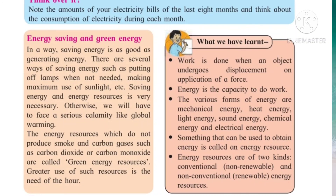In summary, work is done when an object undergoes displacement and application of force. Energy is the capacity to do work. The various forms of energy are mechanical energy, heat energy, light energy, sound energy, chemical energy, and electrical energy. Something that can be used to obtain energy is called an energy resource. Energy resources are of two kinds: conventional or non-renewable, and non-conventional or renewable energy resources.